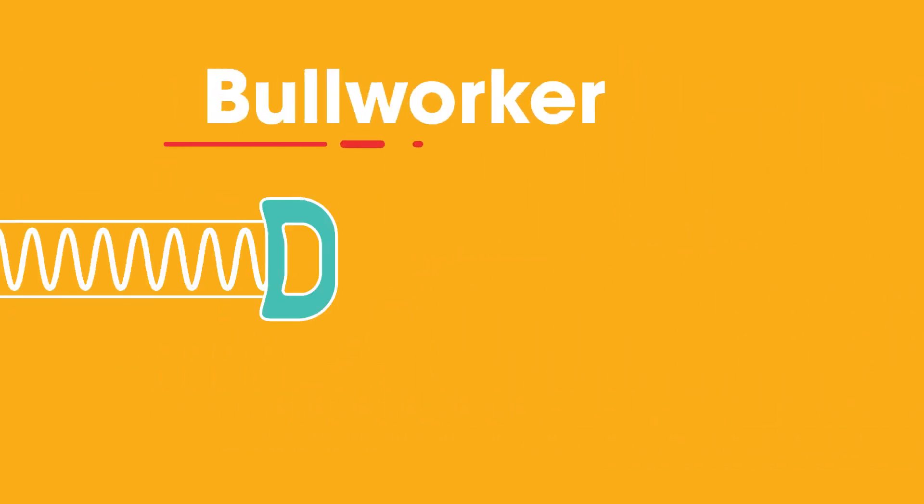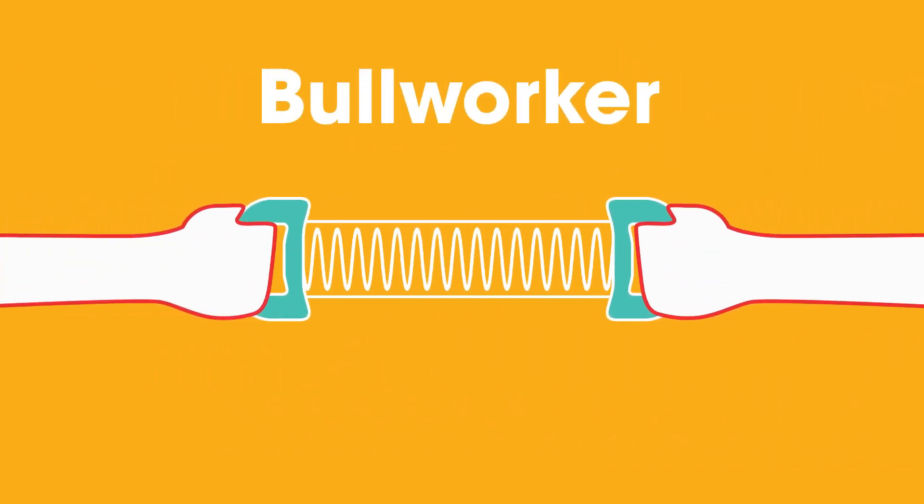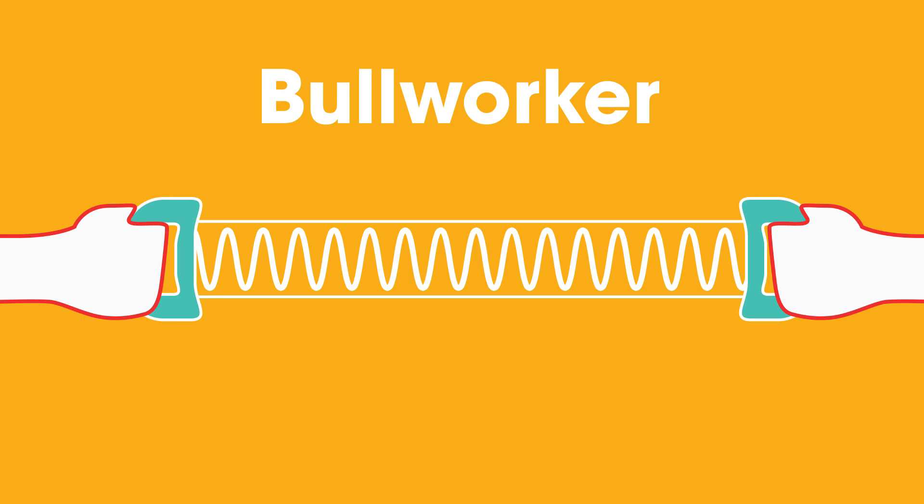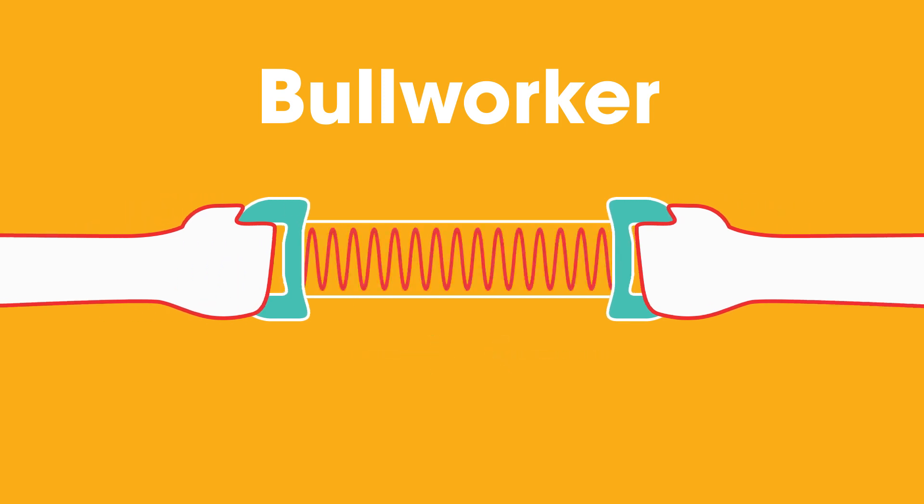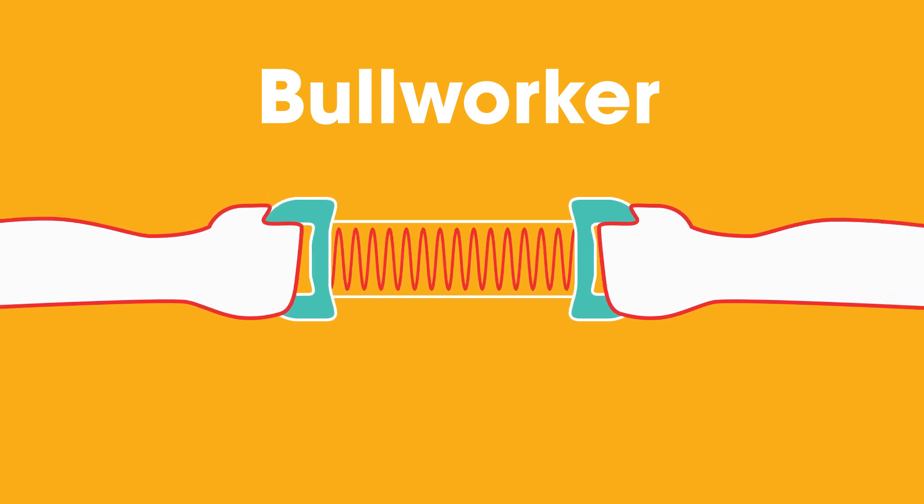This machine, called a bull worker, is used to exercise muscles. When the ends are pushed inwards, the spring inside is compressed. The bigger the force, the more the spring is compressed.